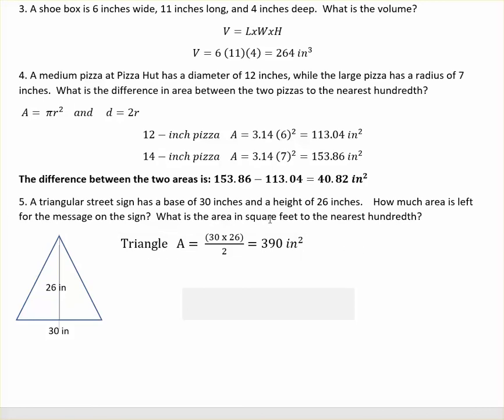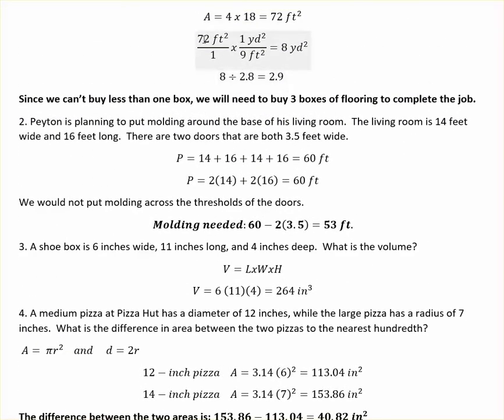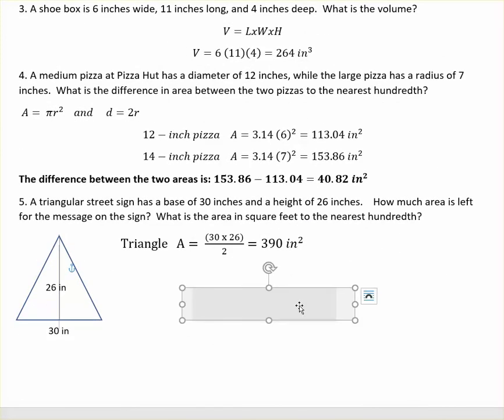And then it says what is the area in square feet? So we're going to do like we did earlier where we have to change square units. It's important to remember that there's 144 square inches in a square foot, because a foot is 12 inches by 12 inches, and 12 times 12 is 144. So we have 390 inches on top over 1. Our unit conversion is 1 square foot equals 144 square inches. The square inches cancel and 390 divided by 144 is 2.71 feet squared.